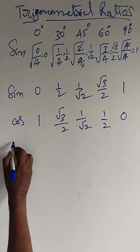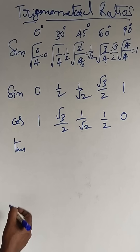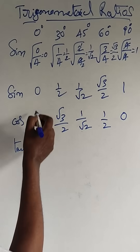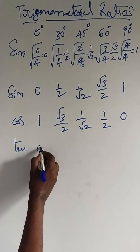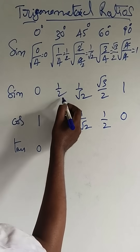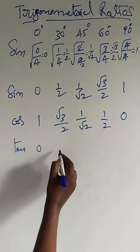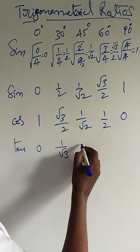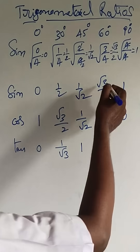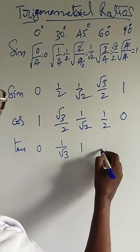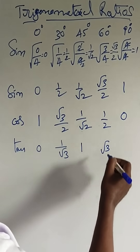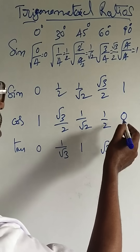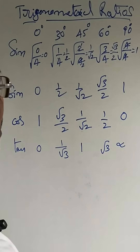Next, tan. Tan is equal to sin theta by cos theta. So: 0 by 1 is equal to 0; 1 by 2 divided by root 3 by 2 is equal to 1 by root 3; 1 by root 2 divided by 1 by root 2 is equal to 1; root 3 by 2 divided by 1 by 2 is equal to root 3; 1 by 0 is infinity, because something by 0 is equal to infinity.